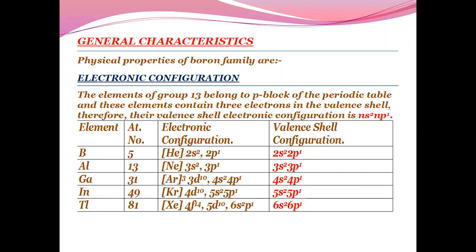Electronic configuration is NS2 and P1. So here you can see Boron, the inert gas is Helium, 2S2, 2P1. Aluminium, the inert gas is Neon, 3S2, 3P1.